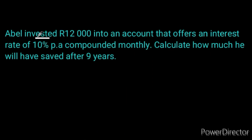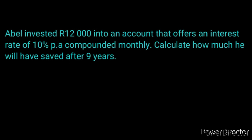So they said Abel invested $12,000 into an account that offers an interest rate of 10% per annum compounded monthly. Calculate how much he would have saved after 9 years. If you look at this question, this person deposited once and leaves the money to grow for a period of time. Whenever somebody invests once and leaves it to grow, this is definitely grade 10 and grade 11 financial mathematics.